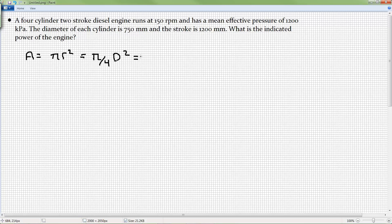So either of those guys will calculate out my area, my piston. So for a diameter or bore of 750 millimeters, so 0.75 meters, so pi divided by 4 times 0.75 squared. So 0.442 meters squared.